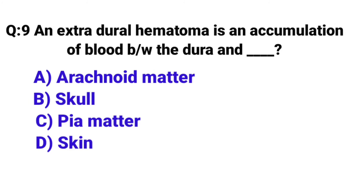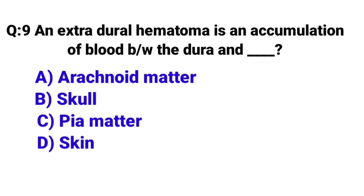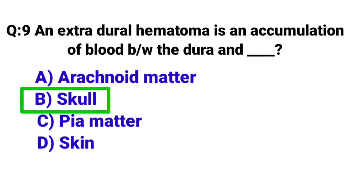Question Number 9: An extradural hematoma is an accumulation of blood between the dura and — Correct answer is Option B: Skull.